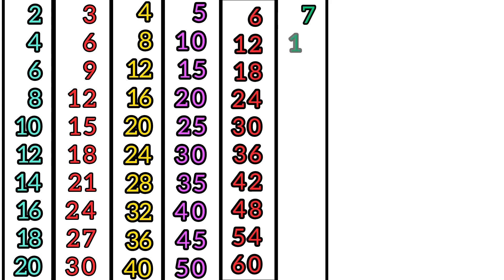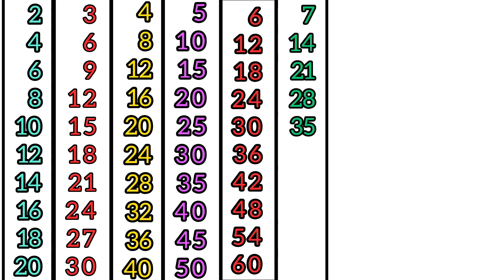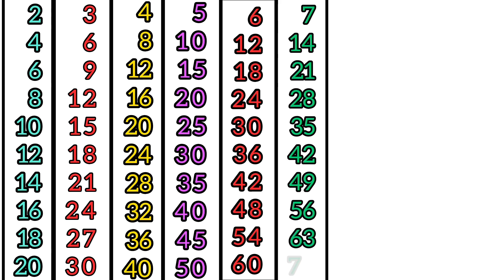7 times tables. 7 times 1 is 7. 7 times 2 is 14. 7 times 3 is 21. 7 times 4 is 28. 7 times 5 is 35. 7 times 6 is 42. 7 times 7 is 49. 7 times 8 is 56. 7 times 9 is 63. 7 times 10 is 70.